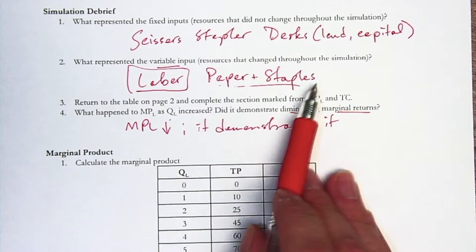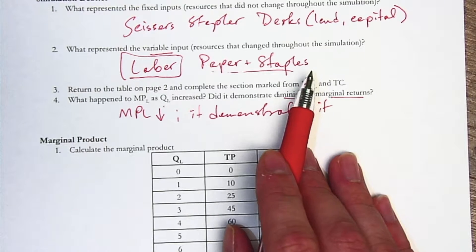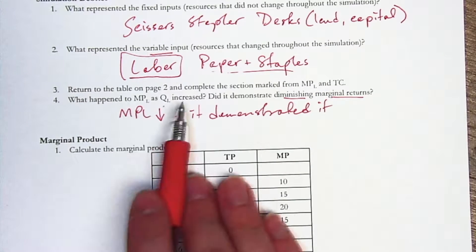Students often tell me the paper and the staples are also variable. We're not necessarily really going to concern ourselves with those that much. So then we're going to take a look at page 2 in just a second.